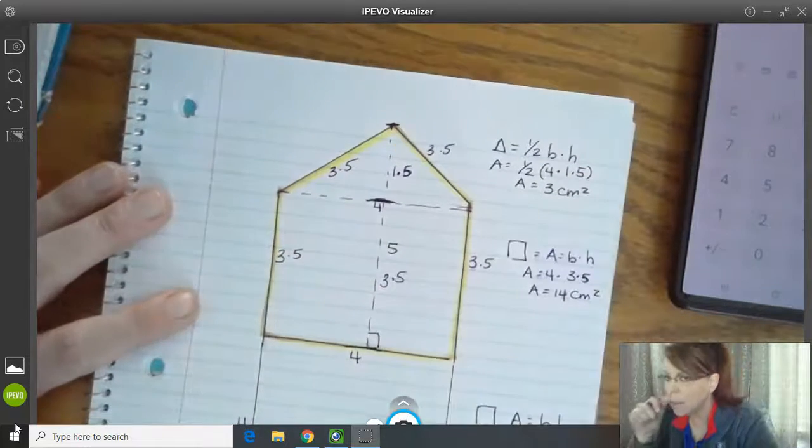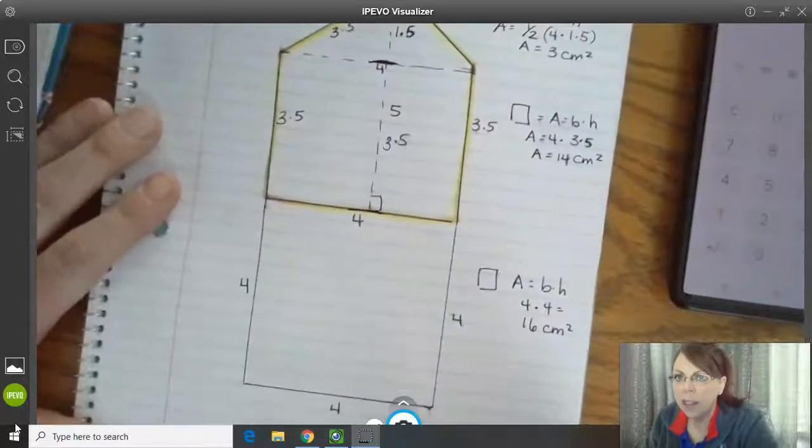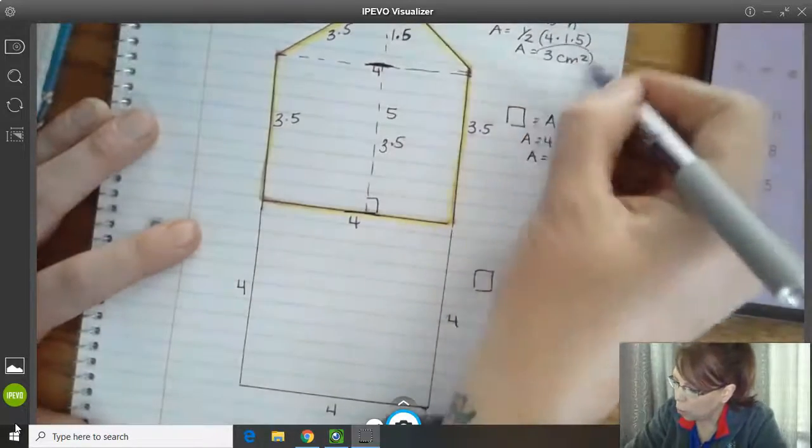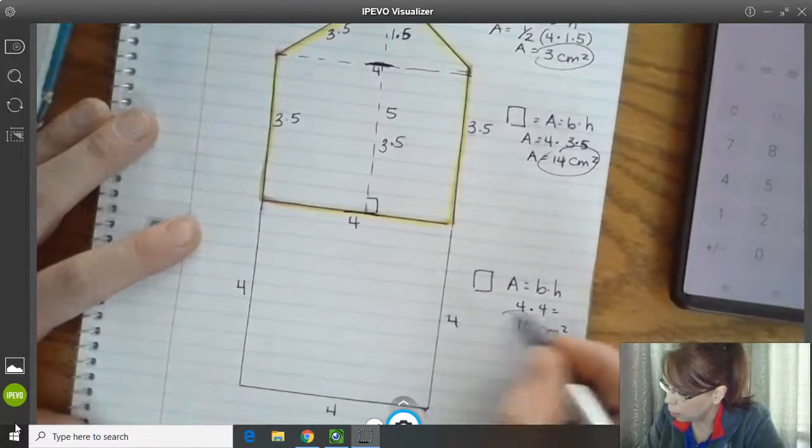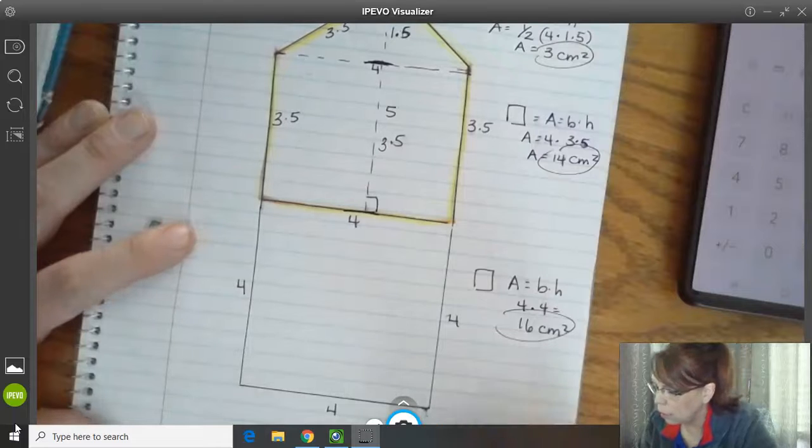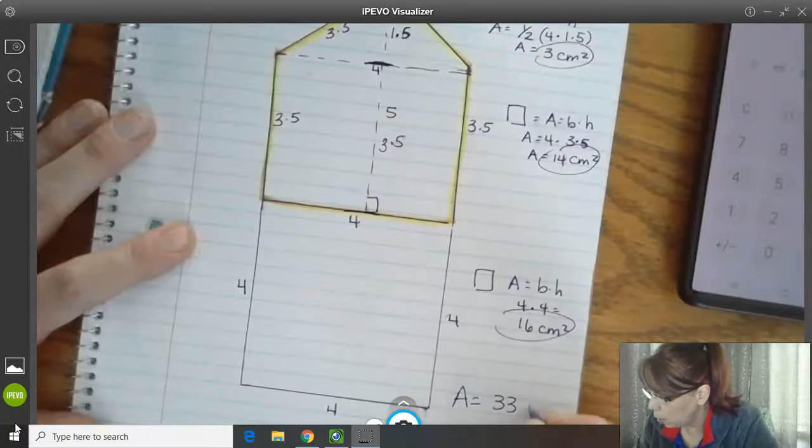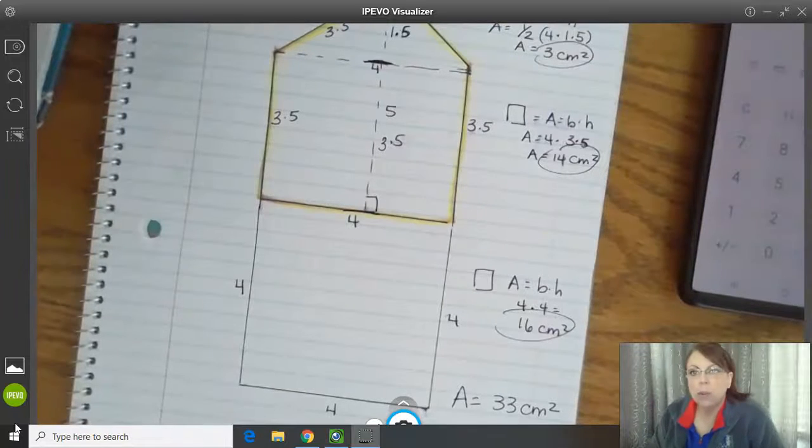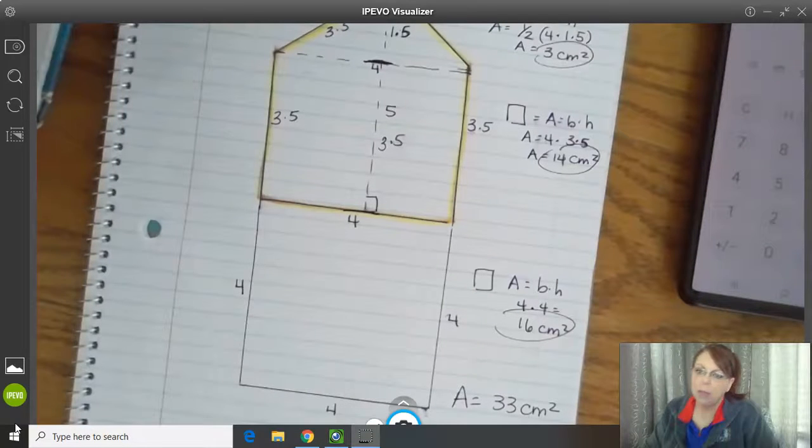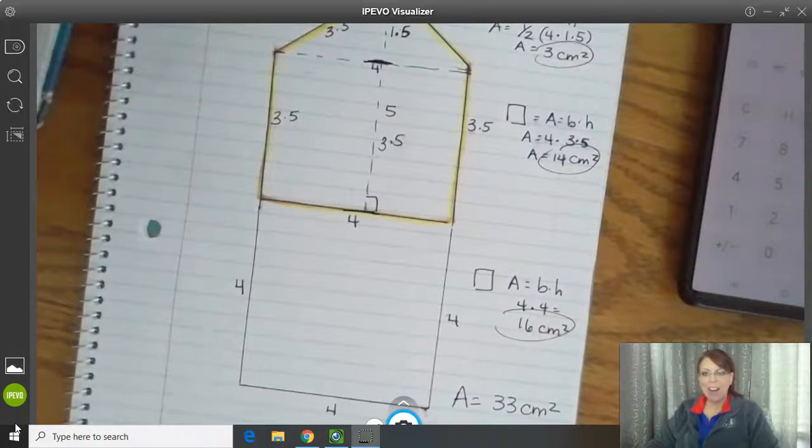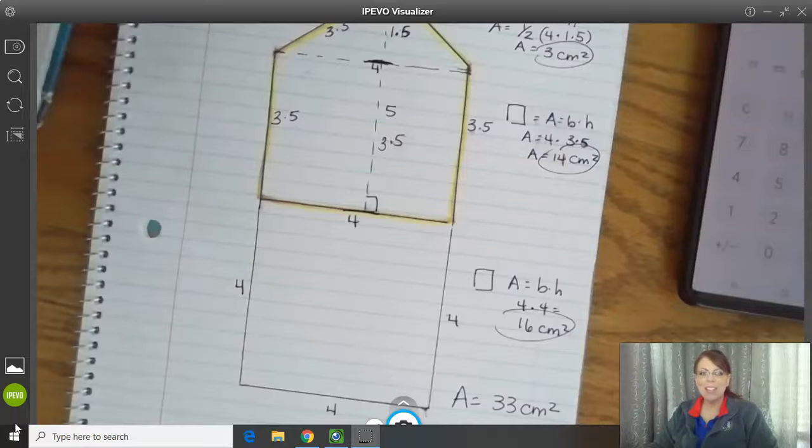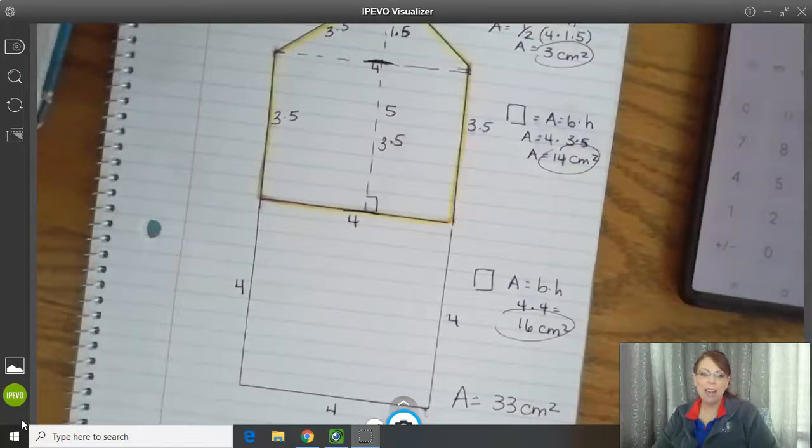Make sure we have our labels on all of this. And now we can just put it together. We have three plus 14 plus 16. So you should get area equals 33 centimeters squared. Three plus 14 plus 16. All right. I hope you guys did it. I hope you did a good job. I can't wait to look at your Flipgrids. Thank you for trying if you did. Have a great day, guys.